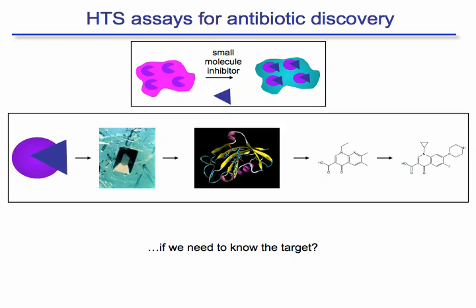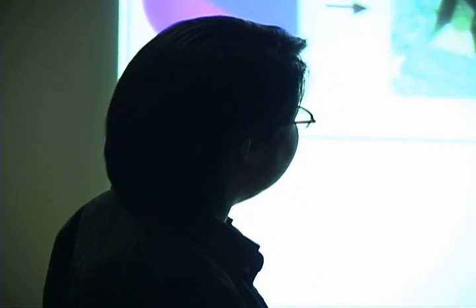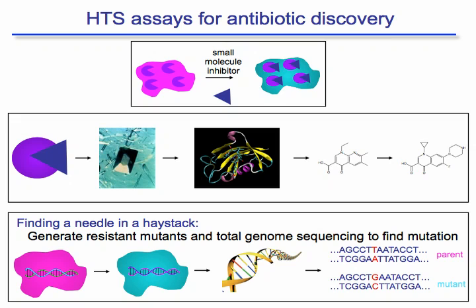In the genomics era, we can ask: if we take a whole-cell screen and find a small molecule that kills the bug, can we then find what the target is? If we can, chemists and structural biologists can get a crystal structure, figure out how the small molecule docks, and make a better, more potent molecule. The question is whether we need to know the target at all. In the pharmaceutical industry, people argue you need to know the target to make a molecule potent enough to be an antibiotic. So: how do you go from a molecule that killed the bug to finding its target?